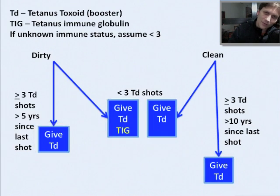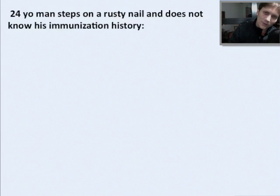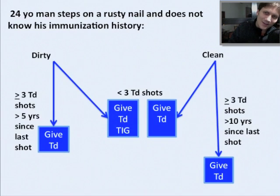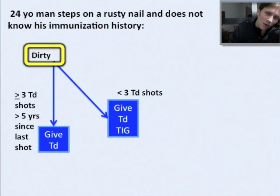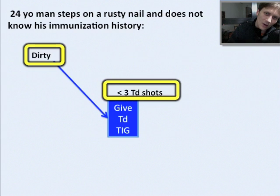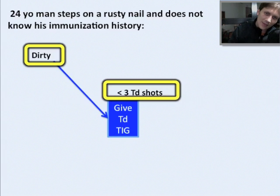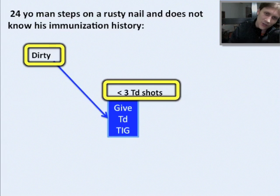Now let's apply this to a few examples. Example number one: a 24-year-old who steps on a rusty nail and does not know his immunization history. Clean or dirty? This is dirty — a rusty nail is always assumed to be dirty. Has he had three or more tetanus shots? No — he has no idea, there's no record in the medical chart, so you have to assume less than three. Now we're dealing with the middle of the M, which leaves us only one option: give this gentleman a tetanus booster and the tetanus immunoglobulin immediately — after stabilizing him with ABCs first.